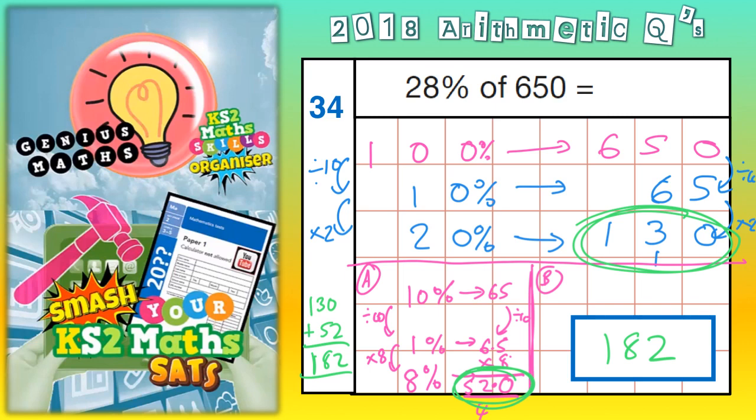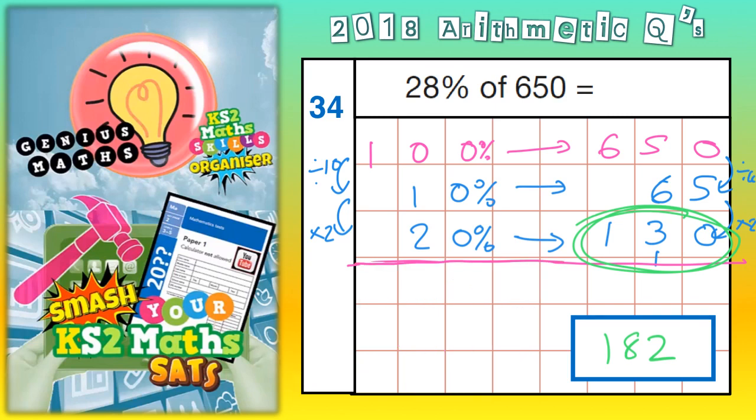But we did have a slightly different method of finding 8%. Now, what you could do instead is recognize that these two numbers add together to make 30%, and then we're only 2% away from the 28% that we need.